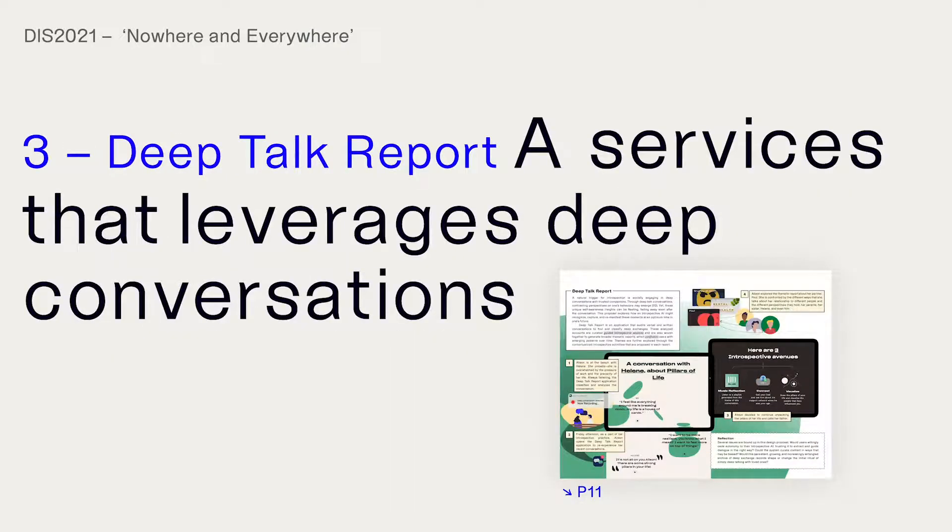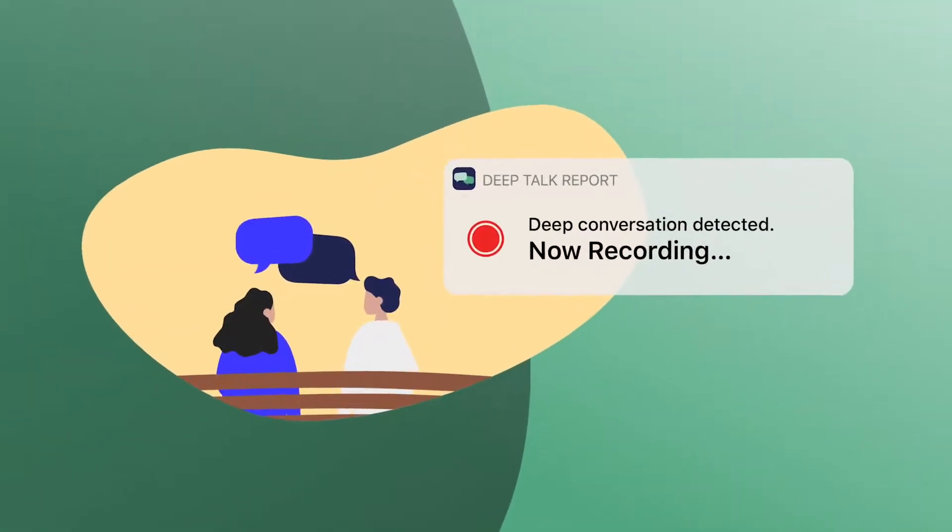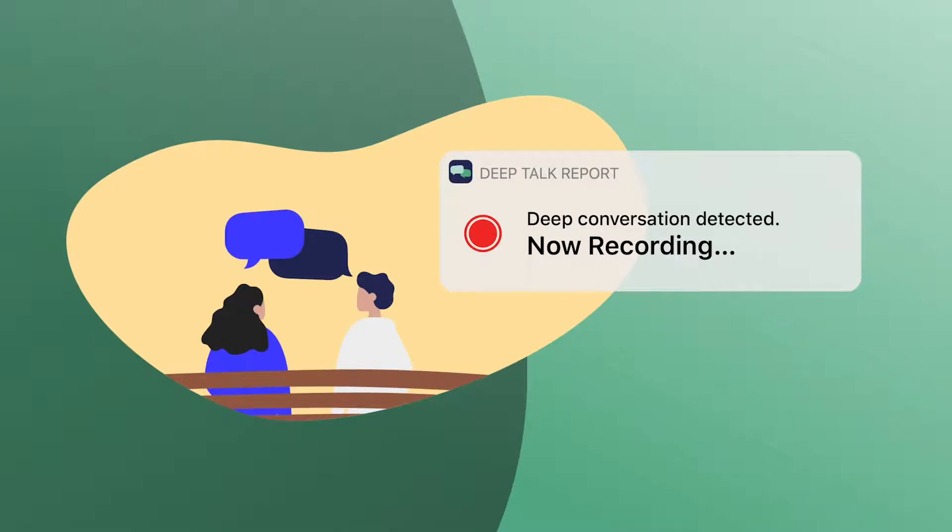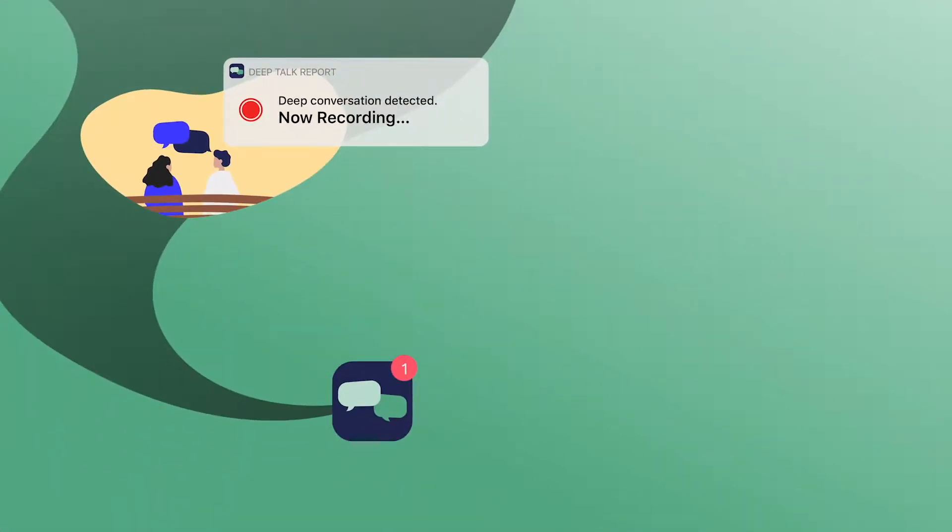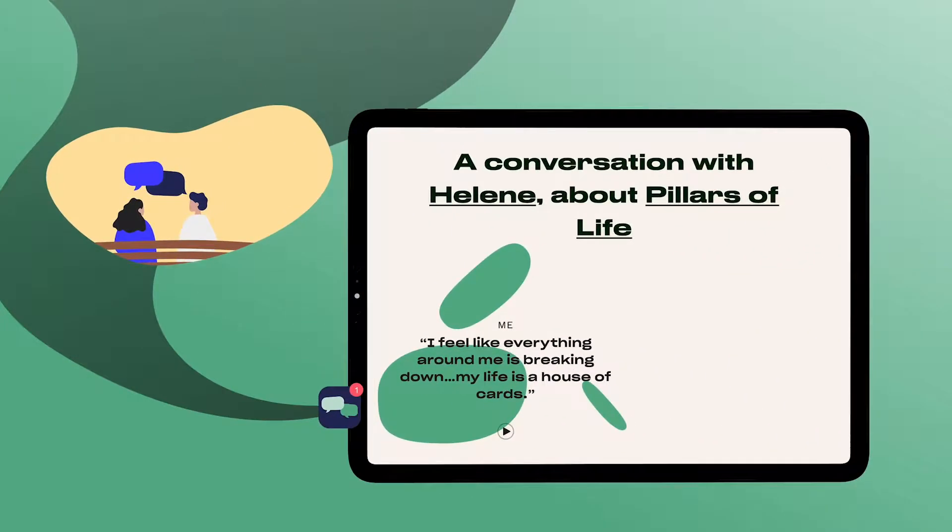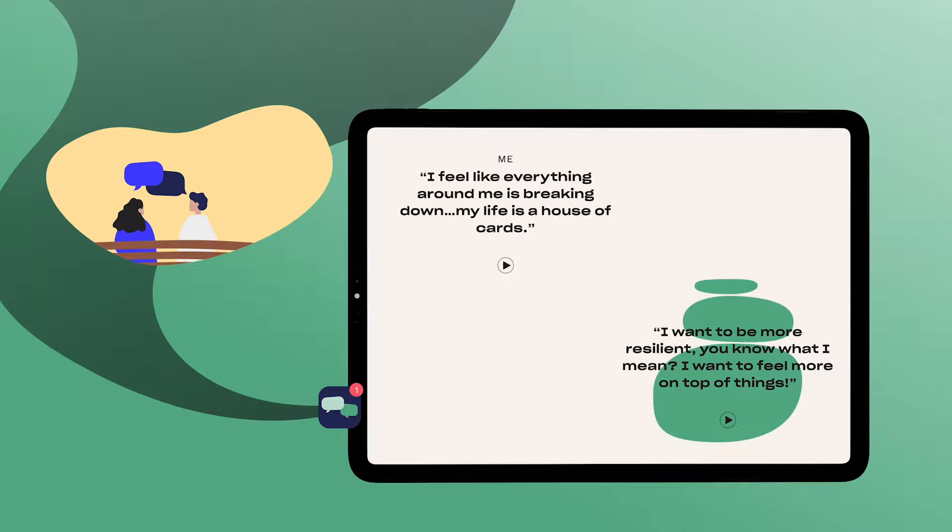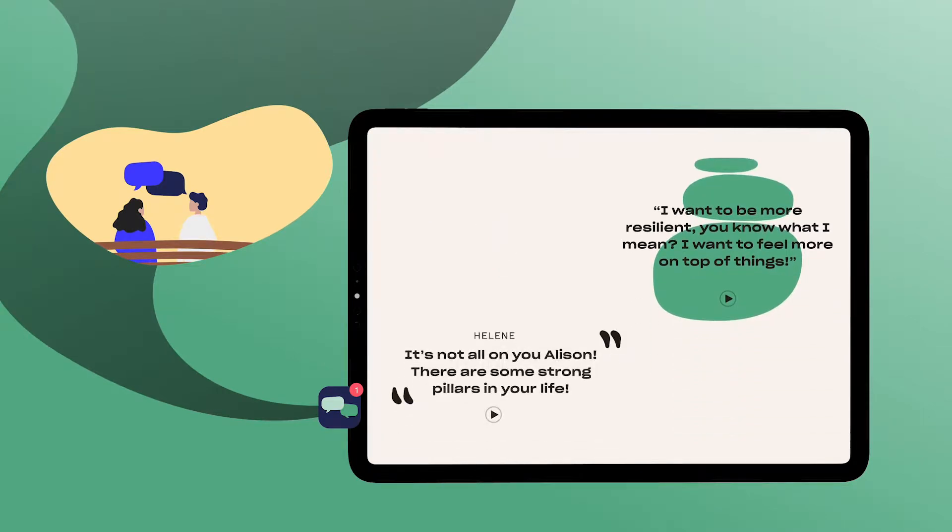A natural trigger for introspection is socially engaging in deep conversations with trusted companions. Deep Talk Report is an application that audits verbal and written conversations to find and classify deep exchanges. Alison is at the beach talking with Helen. She's overwhelmed by the pressure of work and instability in her life. Deep Talk Report analyzes this conversation in the background and generates a curated, unique experience. Friday afternoon, as part of her introspective ritual, Alison opens this report. She re-experiences her recent conversation with Helen. The report highlights the quotes it believes are the most impactful. Generative animations and audio snippets support this narrative.